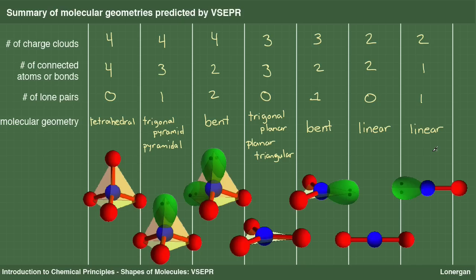In summary, VSEPR is a simple theory for predicting the shape of molecules based on their Lewis structures. You understand VSEPR if you can reason through the summary table we developed, by simply thinking about how objects such as balloons fill space.